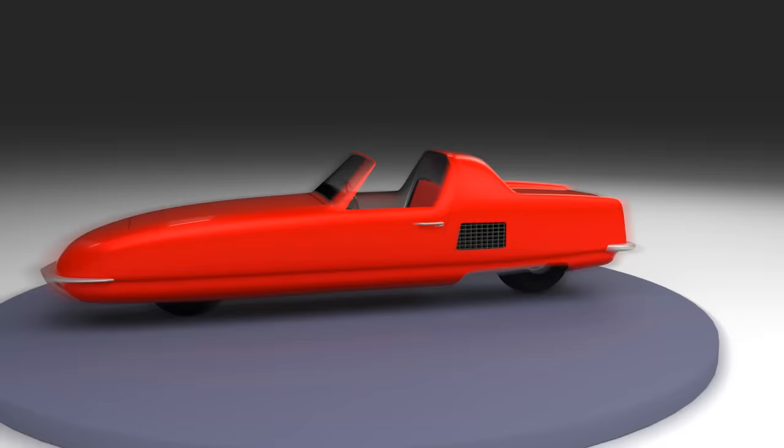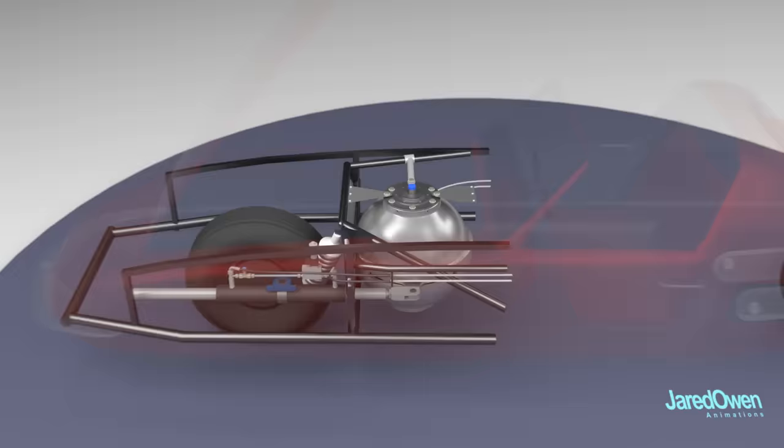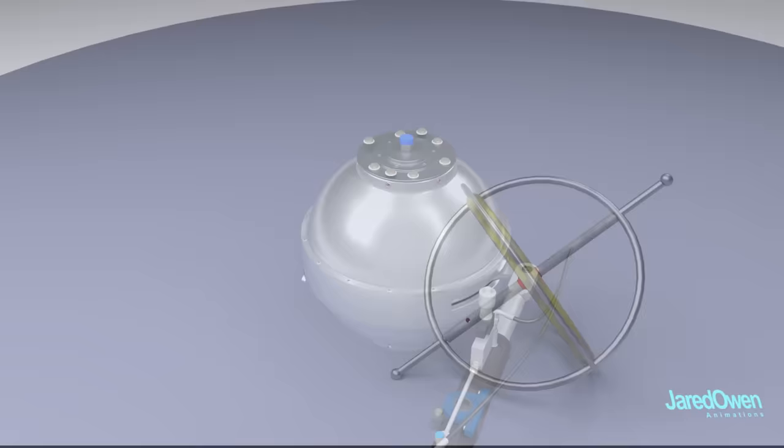The engine is in the back here, and it's powered by gasoline. The front of the car is where the magic happens. This is the gyroscope, which keeps the car balanced. To understand how this works, let's first look at a toy gyroscope.